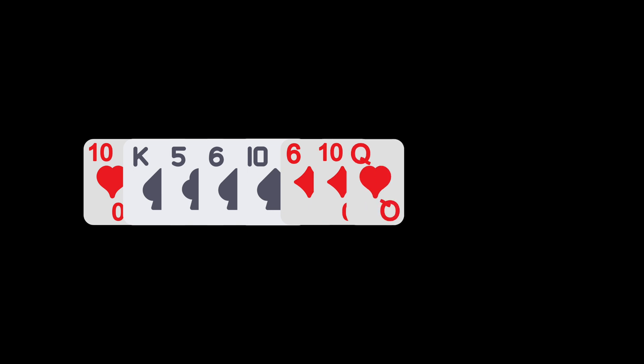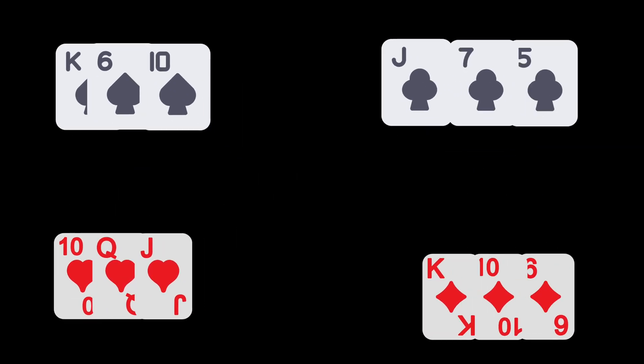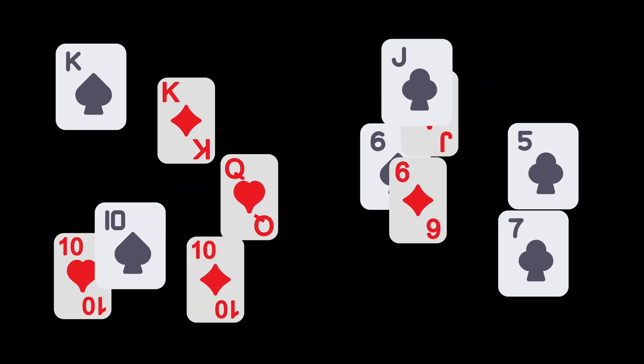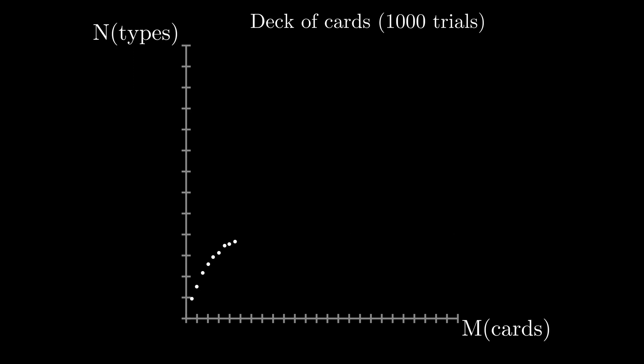A deck of cards is a perfect example of a uniform corpus, where types are dual. You can consider suits or values, so we can yield two different distributions. If we run 1,000 trials of picking cards at random, this is how many tokens we will observe, and this is what our formulas predict. Not bad, right?